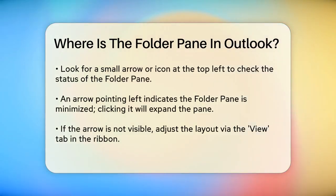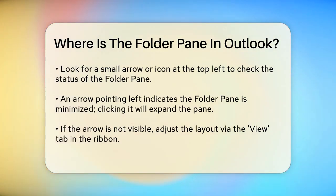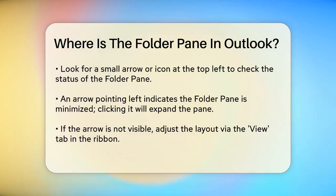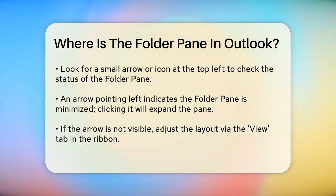It's usually the first thing you see on the left when you open Outlook, but it can sometimes be minimized or hidden. To ensure the folder pane is visible, you can check a few things. First, look for a small arrow or icon at the top left corner of the screen. If you see an arrow pointing to the left, it means the folder pane is minimized. Clicking this arrow will expand the pane, showing you all your folders.